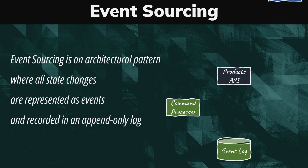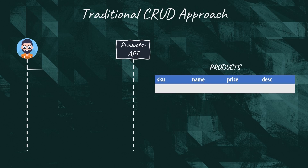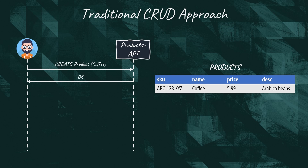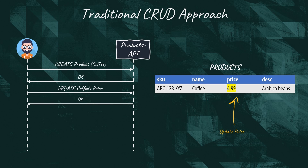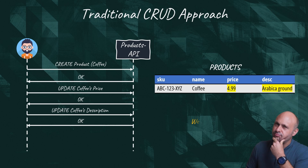Event sourcing is an architectural pattern where all state changes are represented as events and recorded in an append-only log. The best way to understand this is to compare it to a traditional application. In a typical CRUD application, we would store products as records or documents in a database. When the seller creates the product, a corresponding record is saved in the database. If the seller decides to update the price or any other property, we simply modify the value in the existing record. Our application is persisting only the current state of the product.